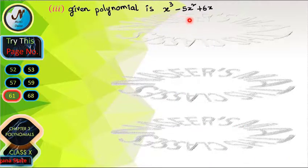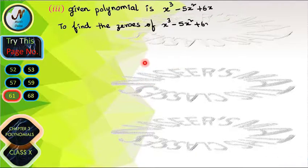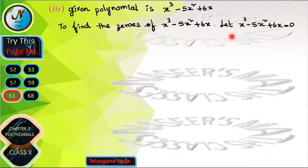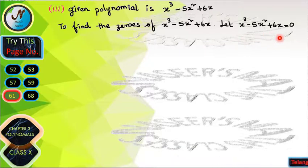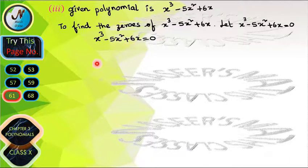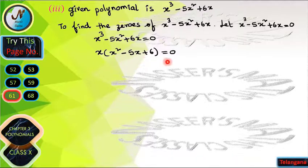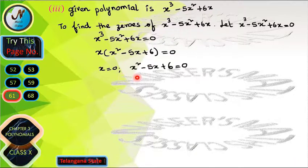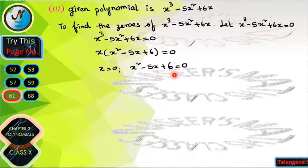The next given polynomial is x³ − 5x² + 6x. To find its zeros, we set x³ − 5x² + 6x = 0. Since x is common in all three terms, we factor it out to get x(x² − 5x + 6) = 0. This gives x = 0 as one zero, and we need to solve x² − 5x + 6 = 0 for the others.